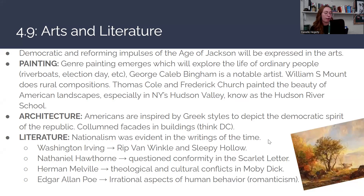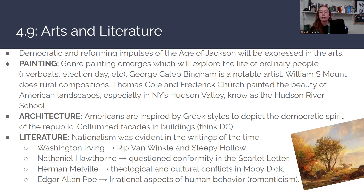The last pieces are going to be painting, architecture, and literature — we see a lot of this new American culture through the arts as well. There are democratic and reforming impulses from the Age of Jackson that are represented in the arts. In terms of painting, genre painting emerges to explore the life of ordinary people — things like riverboats and scenes of election day. George Caleb Bingham is a notable artist for that style of genre painting. William S. Mount does rural compositions capturing rural landscapes. Thomas Cole and Frederick Church focus on painting the beauty of American landscapes, especially in New York's Hudson Valley, establishing the Hudson River School.